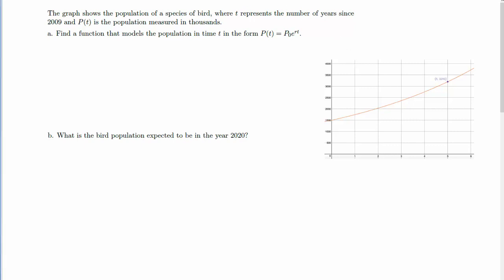Let's work now on a population growth problem. The graph shows the population of a species of bird, where t represents the number of years since 2009, and p is the population measured in thousands. So t, that is the time, is going to be represented on the x-axis. We're going to call it from now on the t-axis. And p of t, that is our function, will be represented on the y-axis, on the vertical axis, and it will give us the population of the bird.